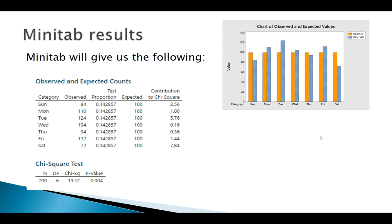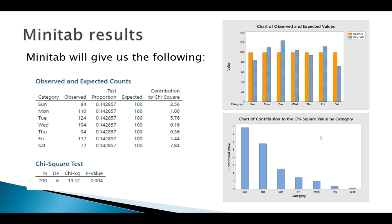Here's all the numerical output it gives us. Let's look at this first graph. In yellow are what we expected - we're saying uniform, 100 in each one. And blue are what we observed. This is a good way of comparing expected and observed visually. Then it gives us a Pareto chart of our contributions to the test statistics, so it can really show us which ones we should be concerned about.